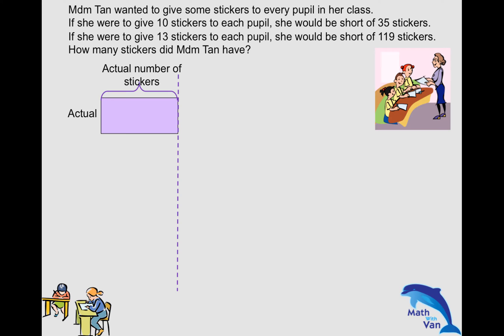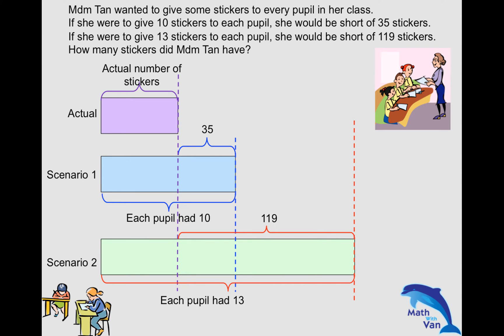So she needed an extra 35 stickers in order to give each pupil 10 stickers. The same thing for Scenario 2, if she were to give 13 stickers to each pupil, she would be short of 119 stickers. So Madame Tan needed an extra 119 stickers. So draw a longer model so that each pupil had 13. So the same thing, since we do not know what is the actual or the total number of stickers used in the two scenarios, we have to see that Scenario 2 and Scenario 1 are interrelated. So Scenario 2 is a continuation of Scenario 1.